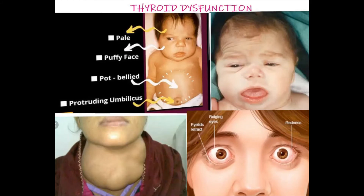Hypothyroidism is due to the decreased secretion of thyroid hormone. There are some associated conditions. The first is goiter, caused due to the inadequate supply of iodine in the diet. Iodine-rich foods such as fish, seaweed, dairy products, grains and cereals should be eaten to prevent this.